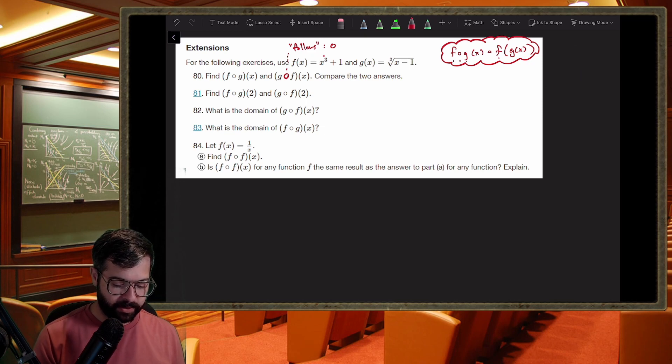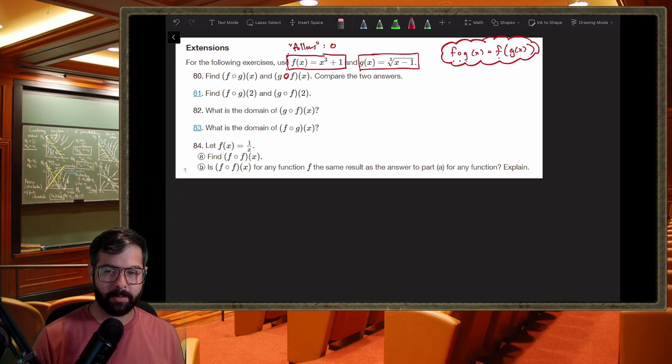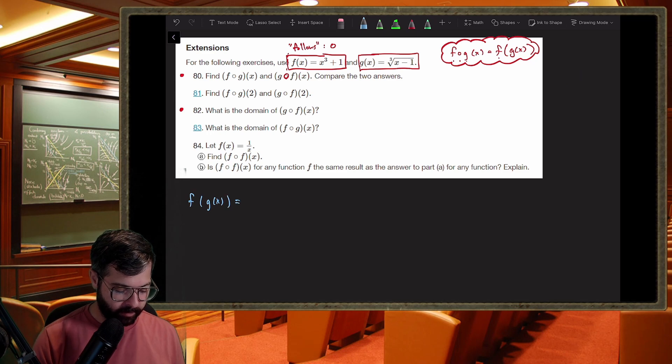Let's say I have these two functions here. F is x cubed plus one, and g is the cube root of x minus one. Let's find f of g of x and g of f of x. So f of g of x means plug g into f. Feed the output of g, which is this, into the function of f wherever x is.